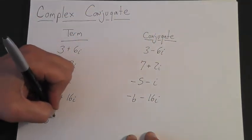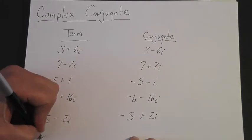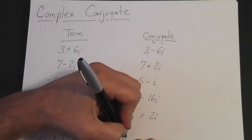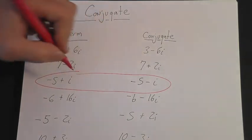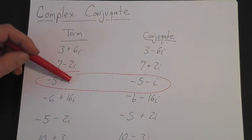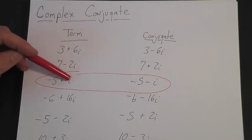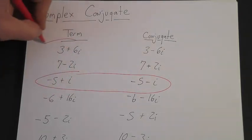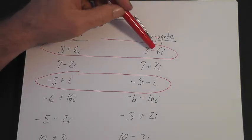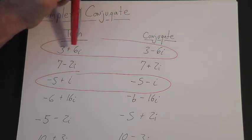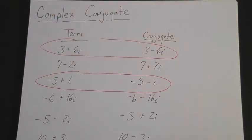And if it's minus 5 minus 2i, it's going to be minus 5 plus 2i. One more: 10 plus 3i is going to be 10 minus 3i. So if you notice, whenever you have a term, to get the conjugate you use exactly the same term but you change the sign that's in front of the i. For example, 3 plus 6i becomes 3 minus 6i — the positive sign in front of the i changes to negative, and the other term remains the same.